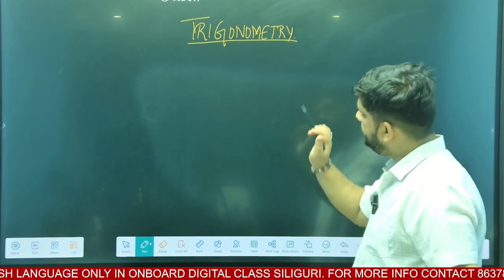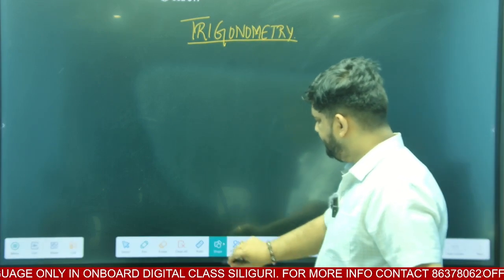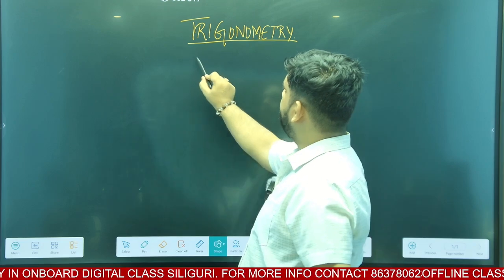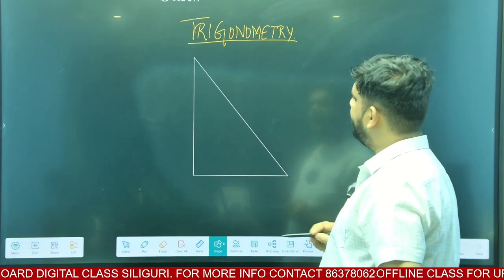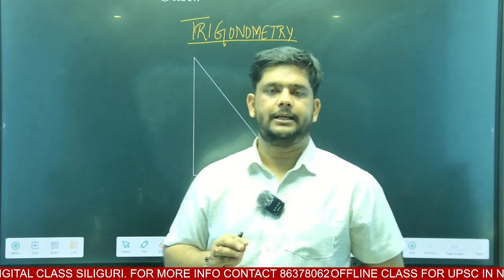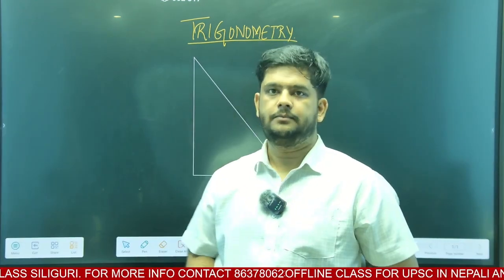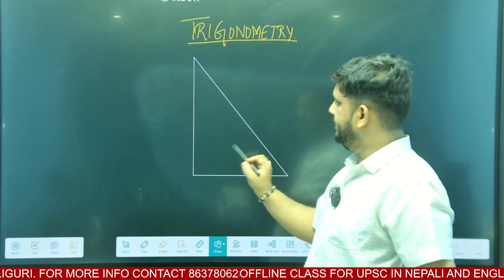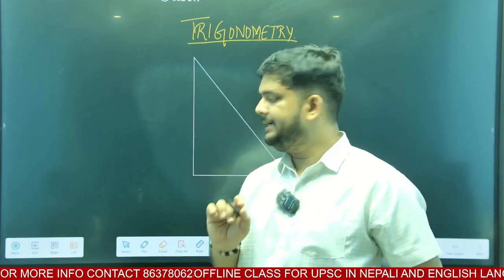Now let's understand what exactly trigonometry is. First, we need to make a triangle. What is trigonometry? Trigonometry — it's three. Measurement of three angles. What is trigonometry? Measurement of three angles. There are three angles.